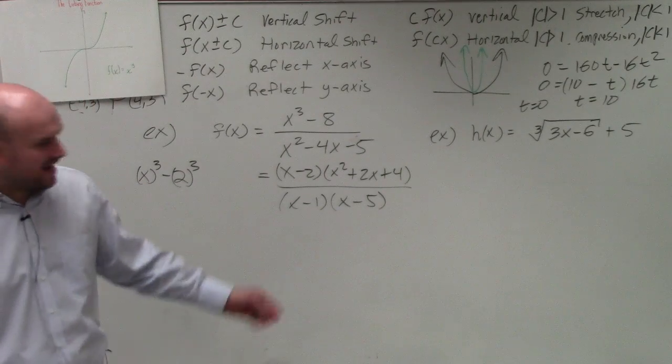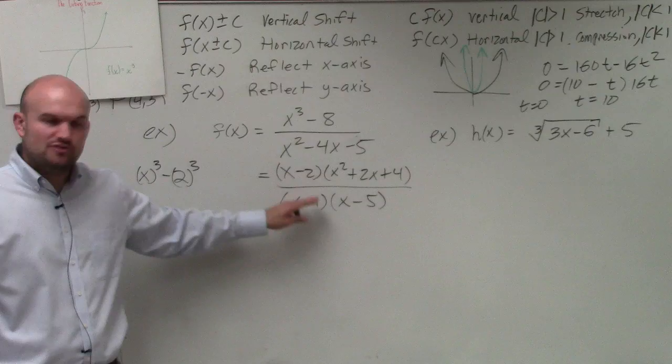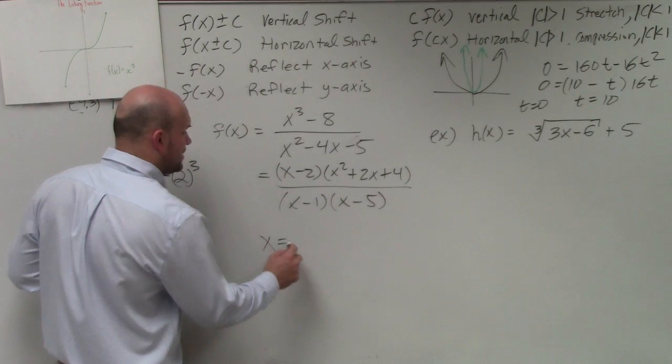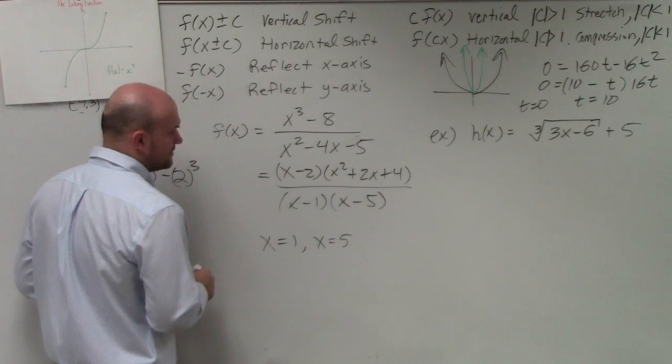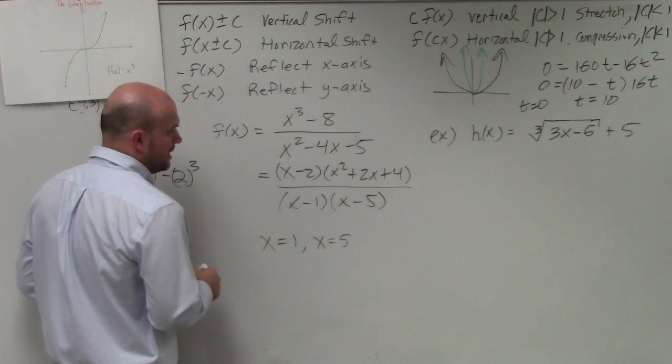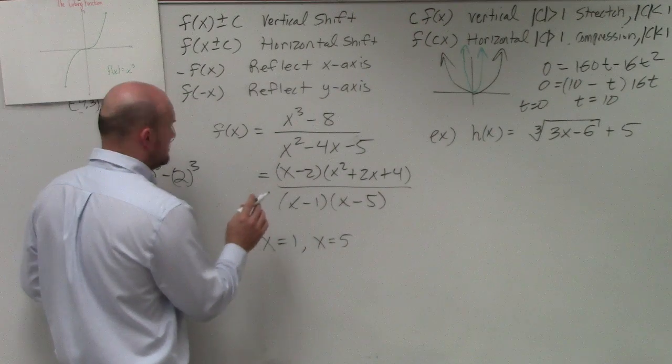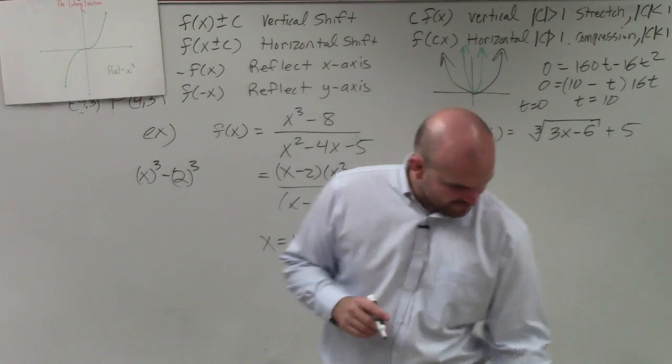We're not dealing with any holes in this case - nothing is divided out - but you can see that I have two vertical asymptotes. So since I have vertical asymptotes...